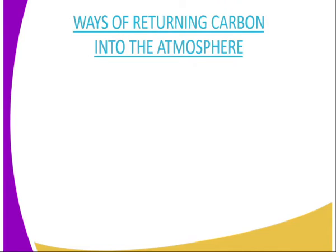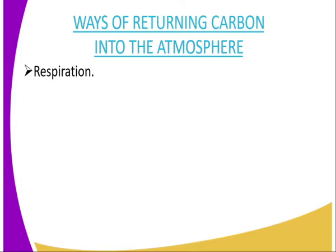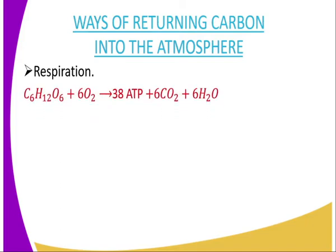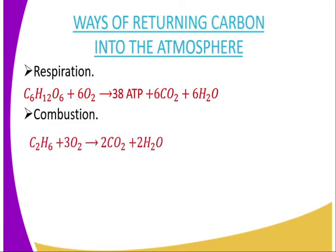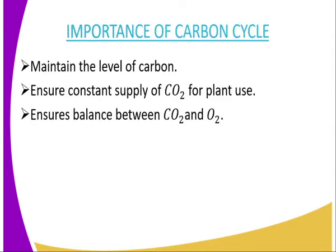Ways through which carbon is returned into the atmosphere: the first one is respiration. As a result of respiration, carbon dioxide is one of the products emitted to the atmosphere, as shown in the equation. Then we have combustion — as we burn compounds of carbonates, carbon dioxide is normally emitted as a by-product. Then we have decomposition — as compounds that contain carbonates are decomposed, it leads to emission of carbon dioxide.